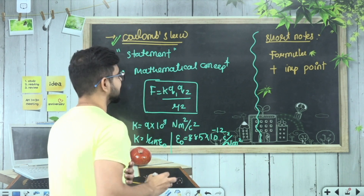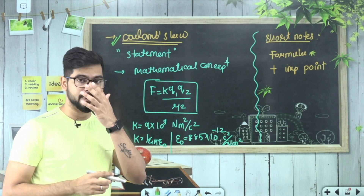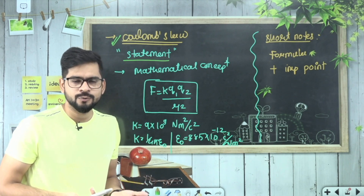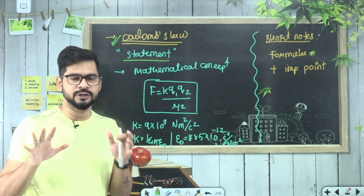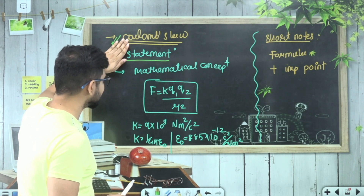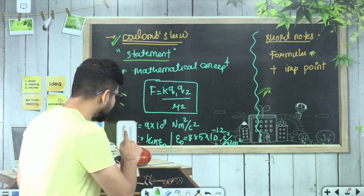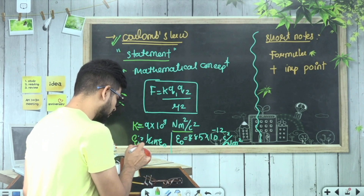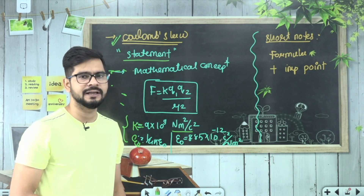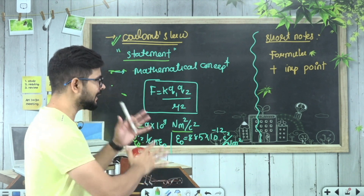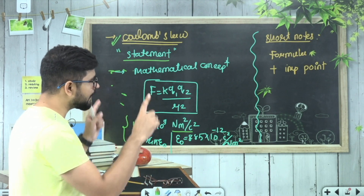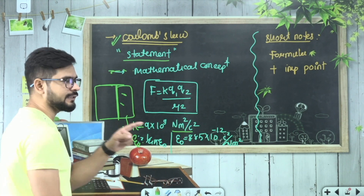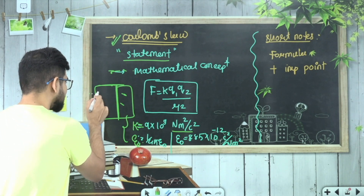Ek example ki taur par - aaj aapne SSP ki class mein Coulomb's Law padha. Main toh handwritten notes aapko bana ke deta hi hoon. Toh Coulomb's Law aapne padha - aapke teacher ne statement likha hoga ya bola hoga: proportional to k, q1 and q2. Jo bhi teacher ne likha hai - statement, mathematical concept, formula, aur beech mein jo constants aate hain - k = 9×10⁹, unit itna hai, epsilon naught itna hai - ye sab rough note mein ajeeb tarike se likha hoga. Isko bahut achhe tarike se pahle likh dijiye. Dhyan rahe bachcha, jis page par aap likh rahe ho - is page mein itna hissa chhod dijiye - ye bahut important cheez hai.